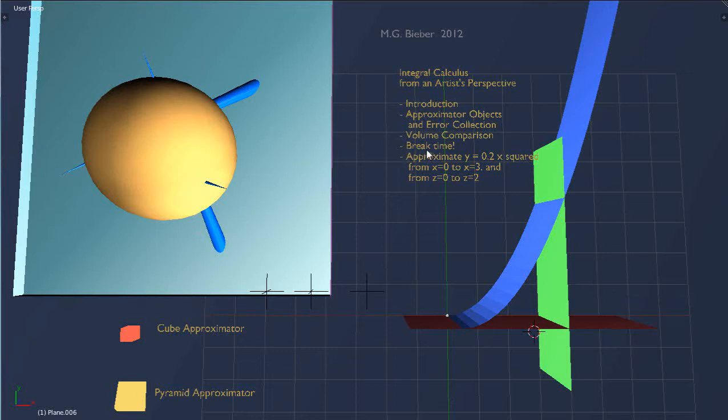We did a volume comparison, then we had a little break. Now we're going to approximate the function y equals 0.2x squared from x equals 0—here's my y-axis in green there—to x equals 3.